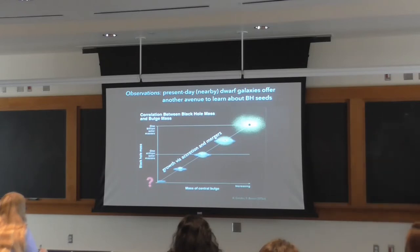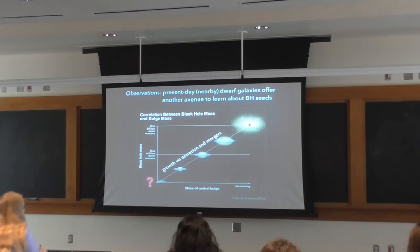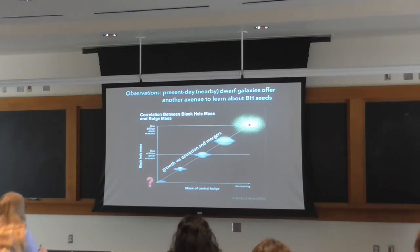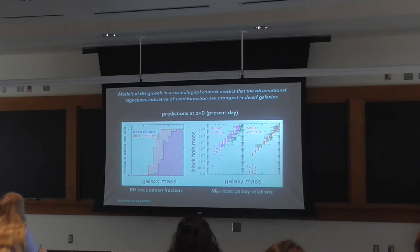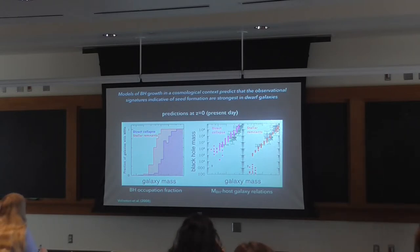In general, bigger galaxies have bigger black holes, so if you want to learn about black hole origins it makes sense to look in low-mass or dwarf galaxies. Unlike today's massive galaxies, dwarf galaxies have experienced relatively quiet merger histories and are expected to host black holes that are relatively pristine — close to their original seed masses. If you consider models of black hole and galaxy growth in a cosmological context starting with different seeding scenarios, the observational signatures indicative of seed formation are strongest in today's dwarf galaxies.